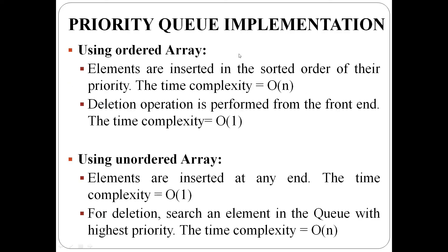Priority queue can be implemented in two ways: by using an ordered array and by using an unordered array. In an ordered array, elements are maintained in decreasing priority order. Deletion operation is easy — simply delete the front end element, so time complexity is O(1). Insertion requires searching for the highest priority position, so the time complexity of the insertion operation is O(n).